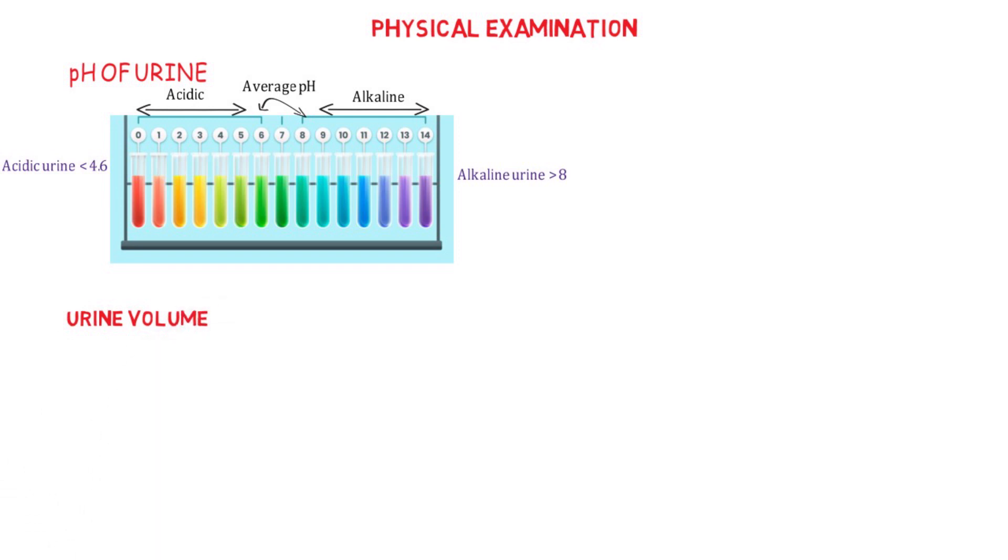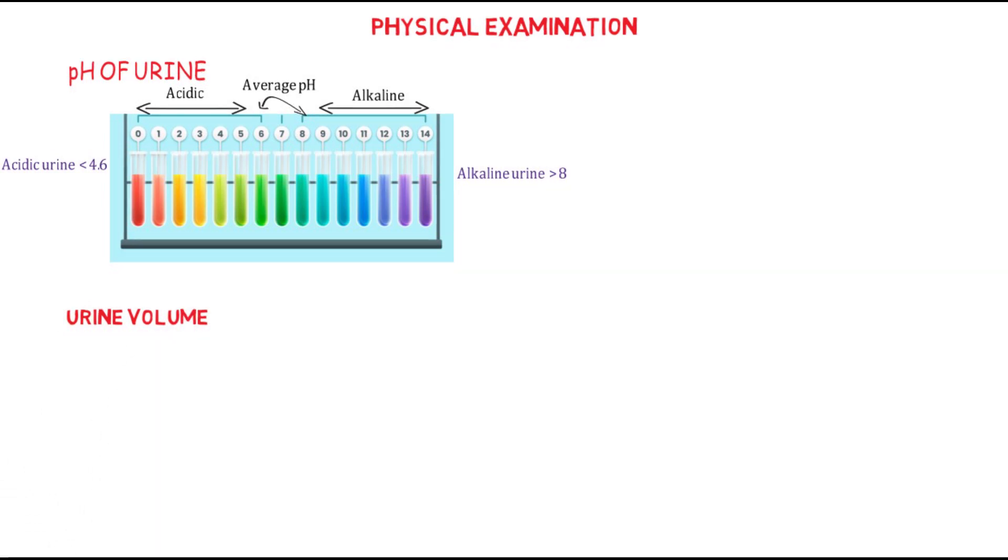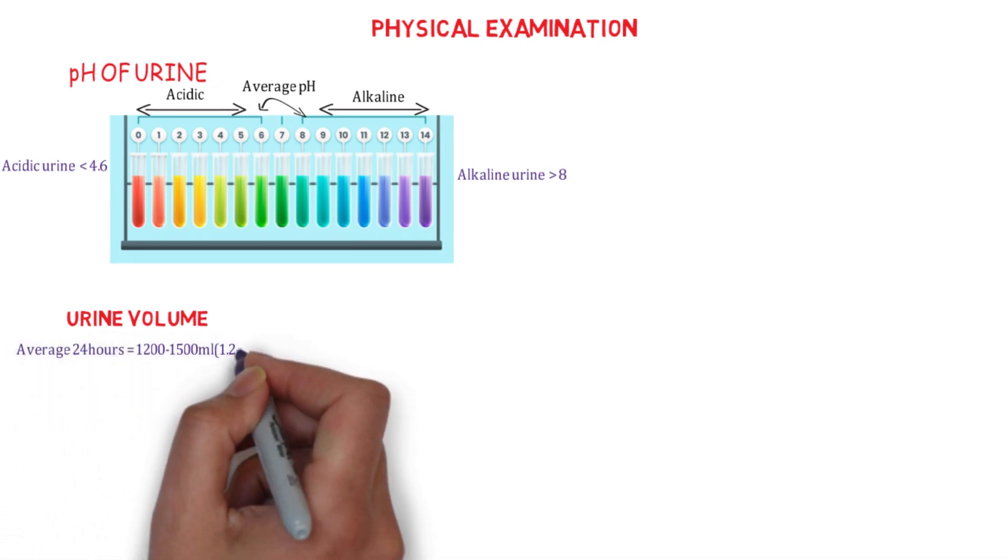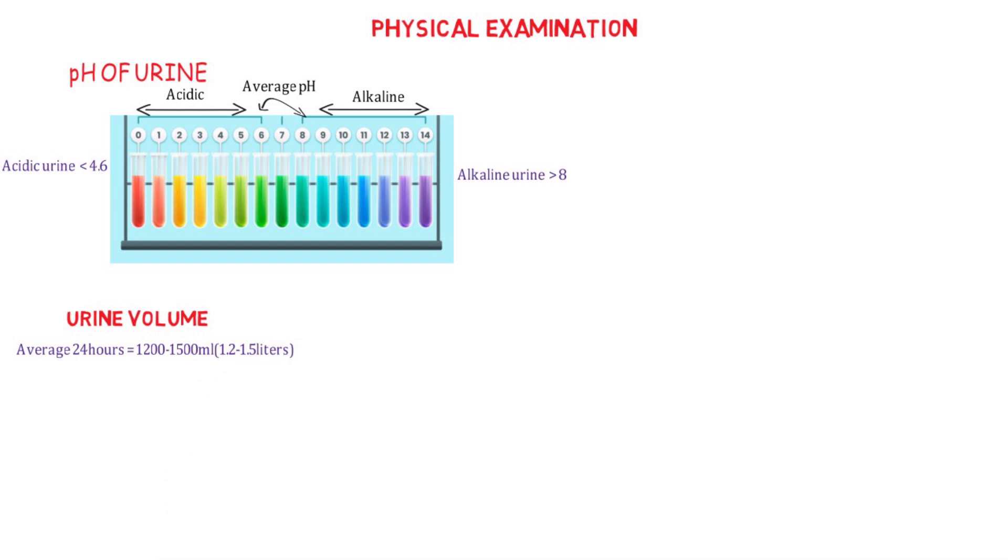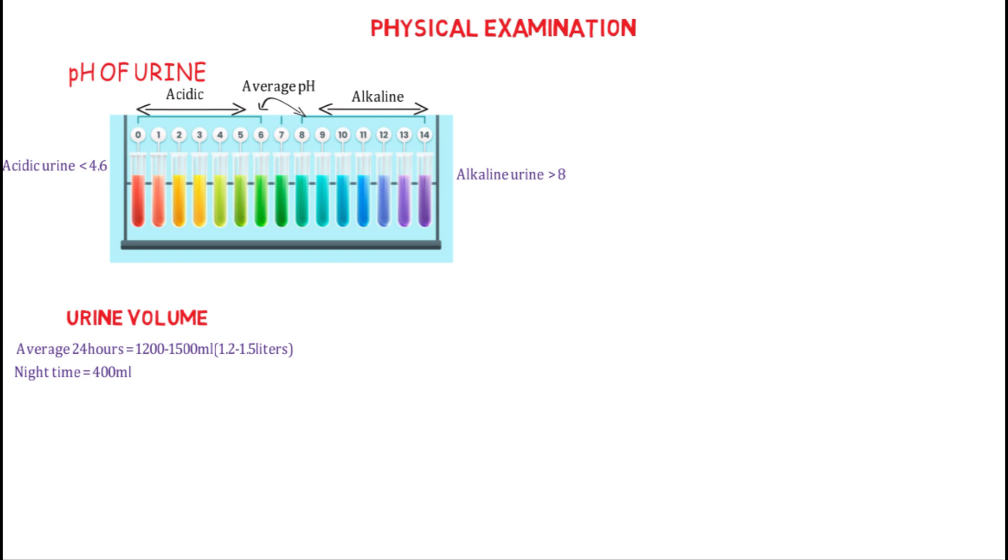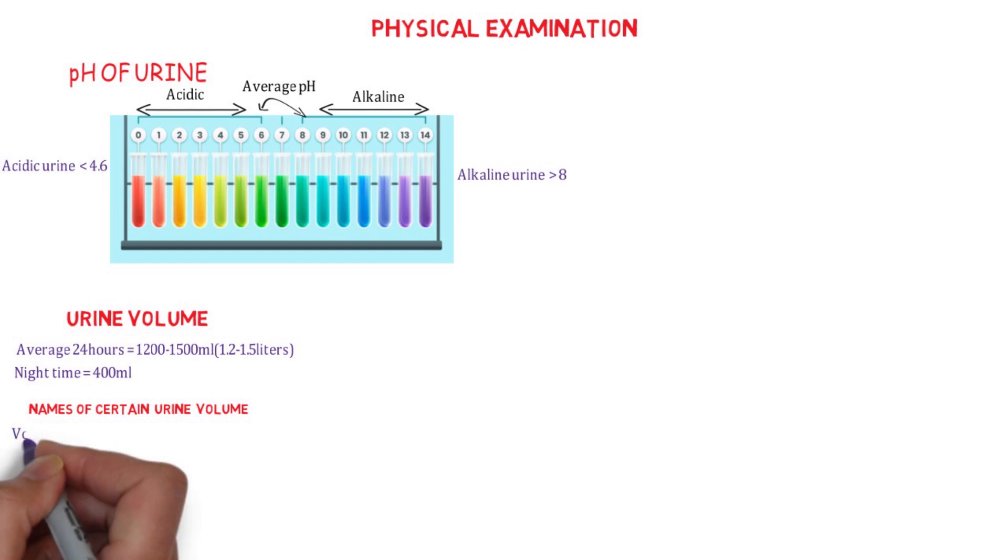Another parameter for physical examination in urinalysis is the urine volume. Average 24-hour urine output in a healthy adult is 1200 to 1500 ml, that is 1.2 to 1.5 liters, while the night volume is about 400 ml. Certain conditions may result in a decrease or an increase of urine formation in the body. A volume greater than 2000 ml is polyuria, while that below 500 ml is called oliguria.